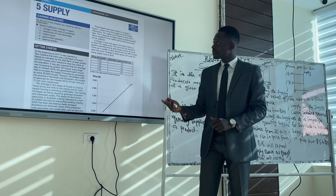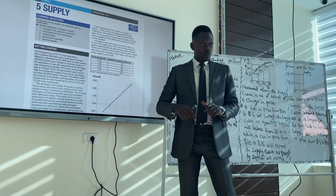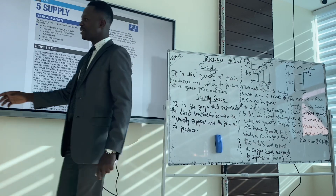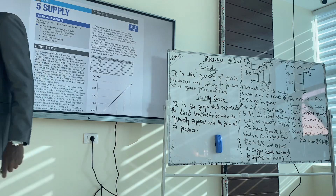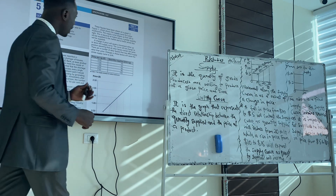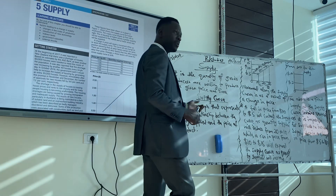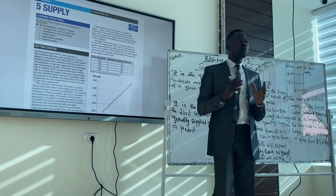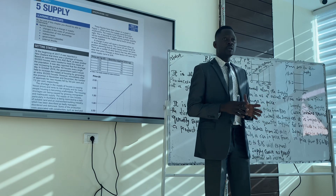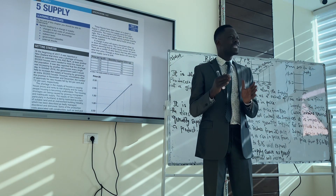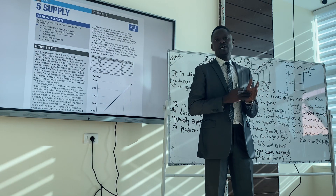Good morning. We continue with business, Chapter 5: Supply. Supply simply means the quantity of goods producers are willing to produce at a given price and time.